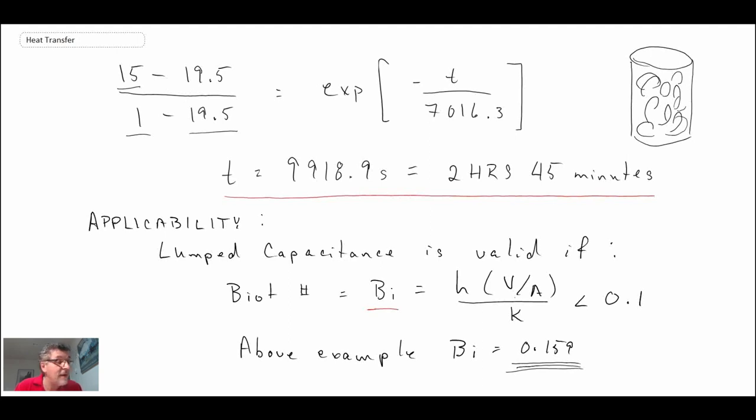That's an example showing how to use the lumped capacitance technique. In the next segment, which will conclude this lecture, we're actually going to do this experiment. We'll take a can out of the fridge two different ways—one opened, one closed—and examine it with an IR camera and thermocouple to see if this solution makes sense.